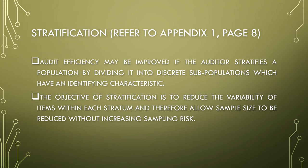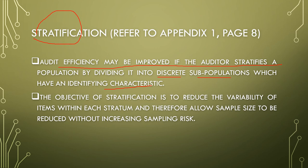Stratification: audit efficiency may be improved if the auditor stratifies a population by dividing it into discrete sub-populations which have an identifying characteristic — from the word 'strata,' meaning to categorize. The objective of stratification is to reduce the variability of items within each stratum and therefore allow sample size to be reduced without increasing sampling risk.